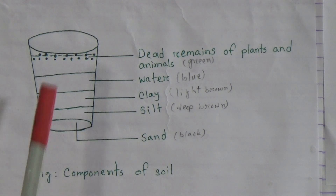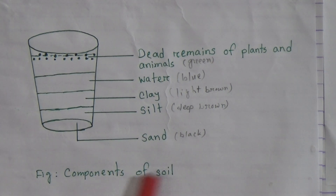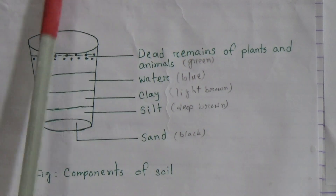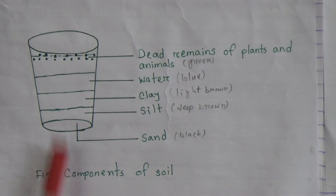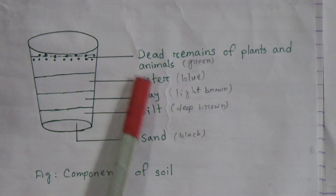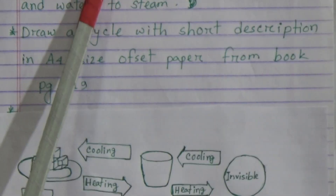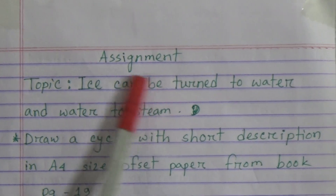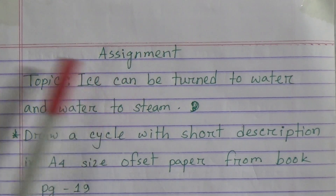You must also write the figure name: 'Components of Soil.' So you have to write the topic name and the figure name. Draw, label, and color the picture.